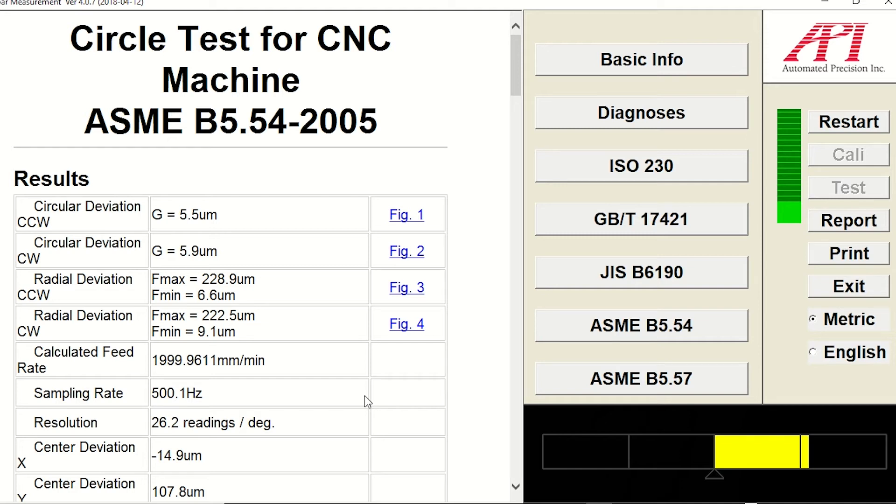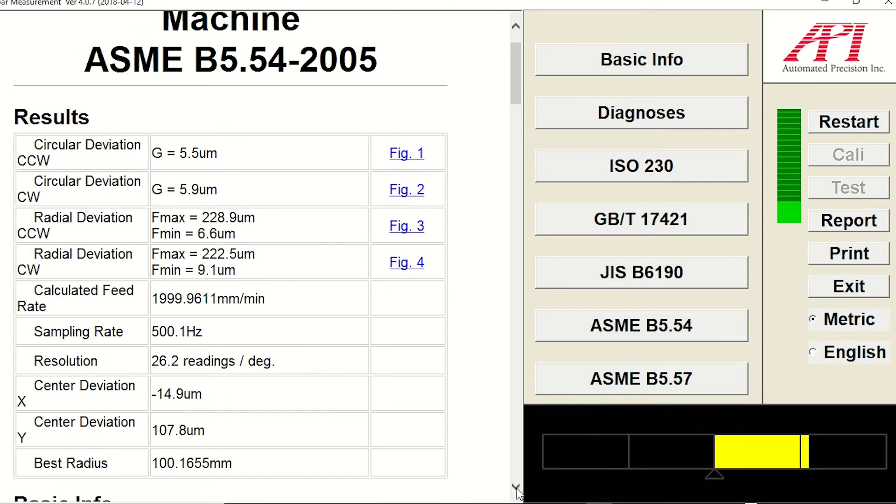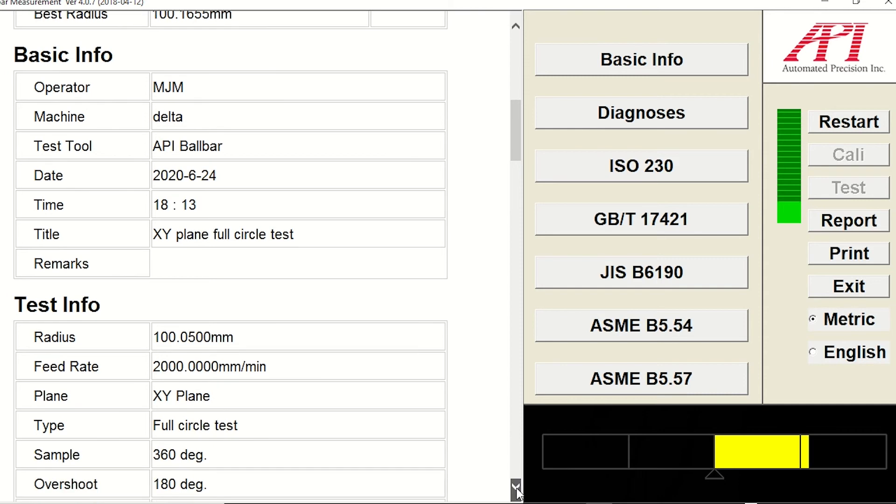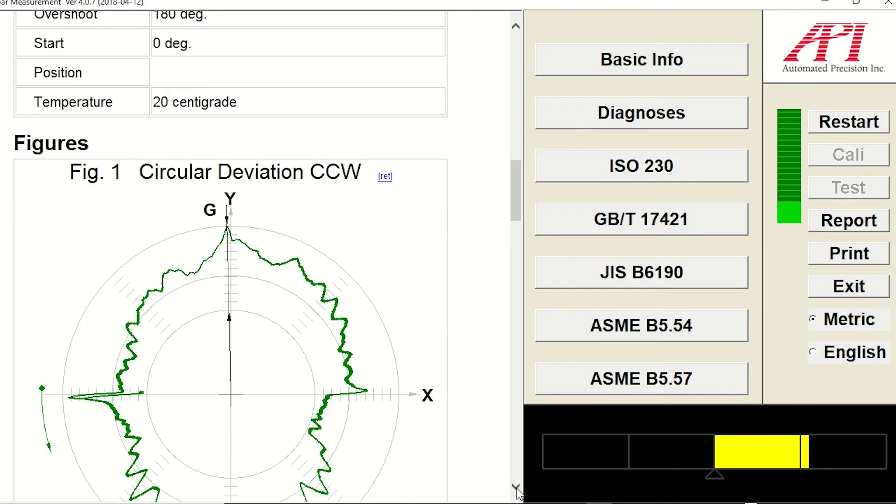Circular deviation is the bottom line. That's what you want to find out. And then from there you find out why isn't it round. It could be backlash, it could be servo mismatch, it could be a faulty setup, and this will tell you whatever the problem is.